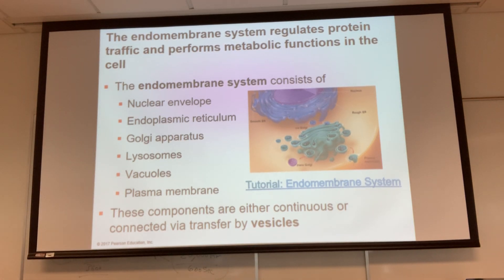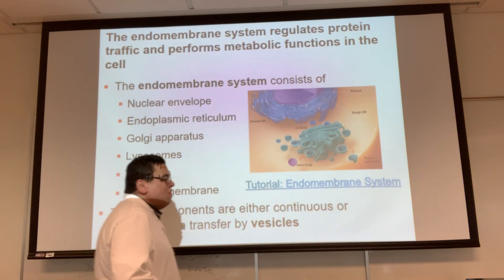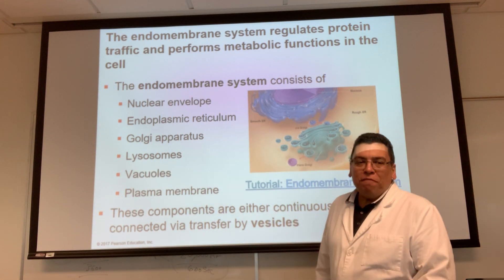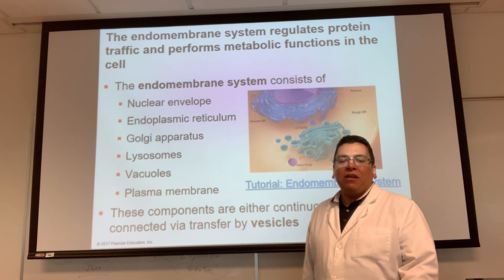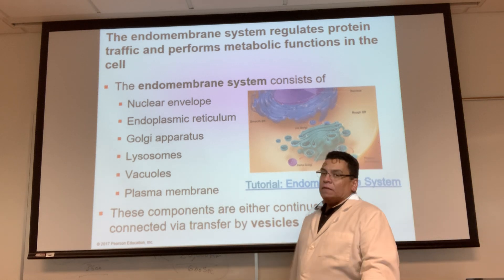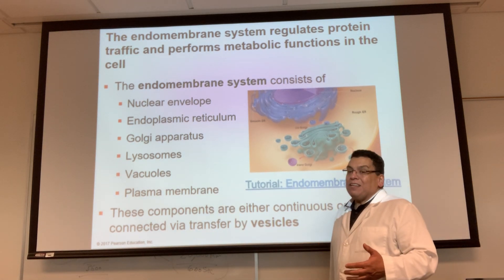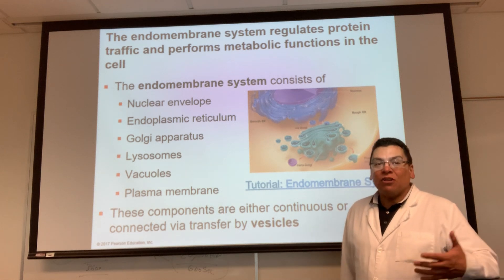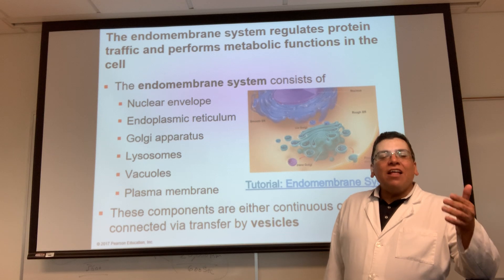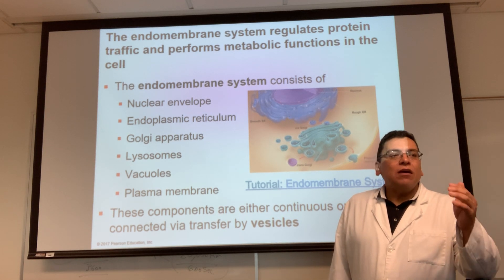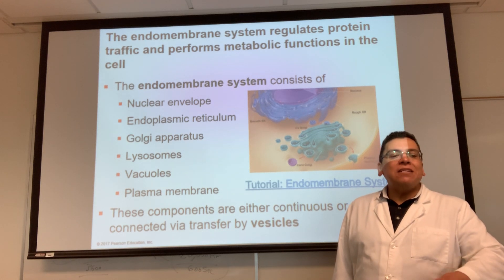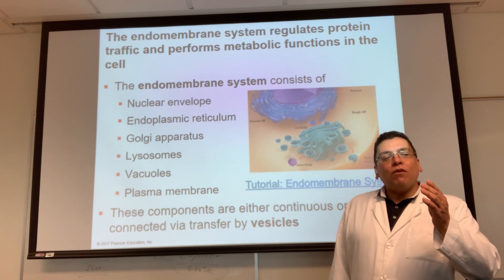What we're going to talk about now is something called the endomembrane system. It's a system, so it's made up of multiple components. The endomembrane system is a collection of cellular structures or organelles within your cell, and their main job is to make and traffic proteins — that means make proteins and send them for delivery.